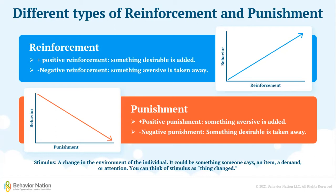Next, punishment. There is positive punishment, where something aversive is added, and there is negative punishment, where something the child desires is removed. You could think of positive punishment as adding a chore to your child's list of chores for the day, or negative punishment by removing their free time. In both these instances, the behavior will decrease.